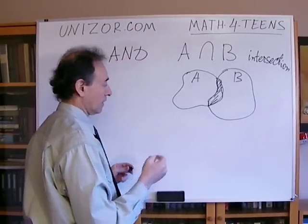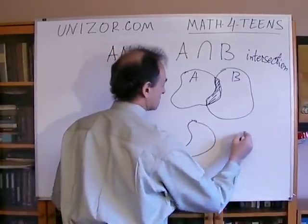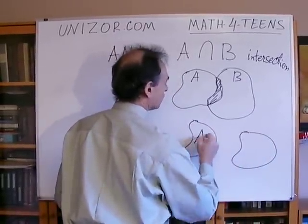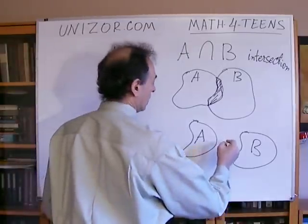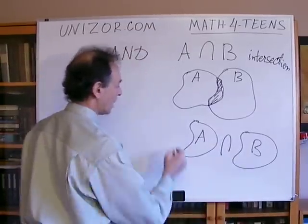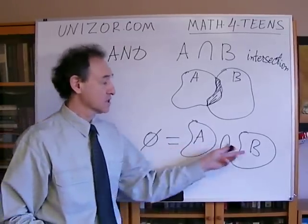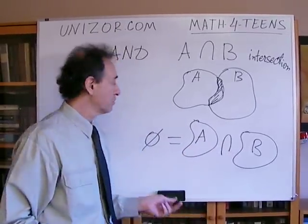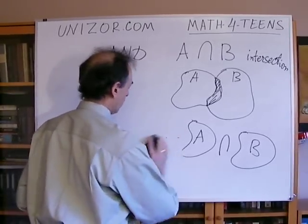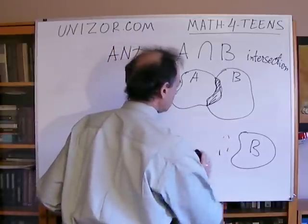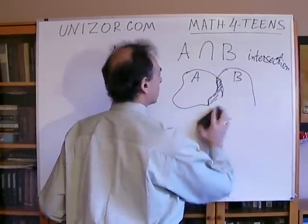Just as an example, what's the intersection when there are no common elements? The intersection between these two sets is an empty set, since there are no elements which belong to both of them. Alright, so we've got union and we've got intersection.